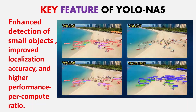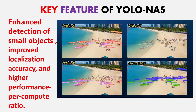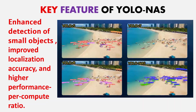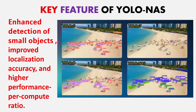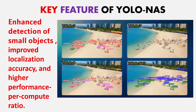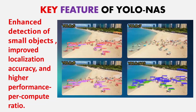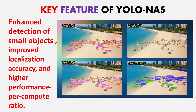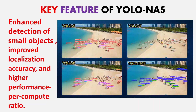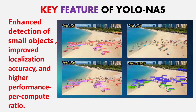YOLO NAS enhances the detection of small objects and improves accuracy, giving better performance by compute ratio. In front of you, you can see the comparison of YOLO V5, YOLO V8, and YOLO V7. YOLO NAS has been evaluated for small objects and we can see that YOLO NAS outperforms YOLO V5, YOLO V7, and YOLO V8 models.